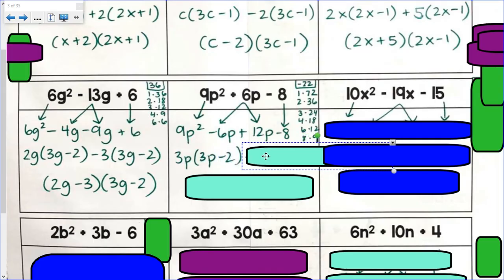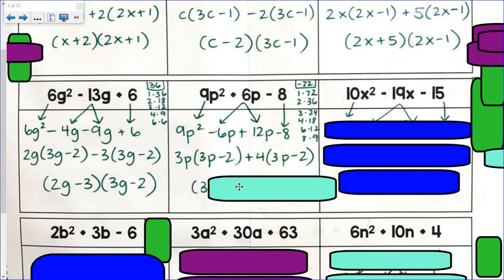2nd GCF is a positive 4. If I factor out a 4, I'm left with 3p minus 2. 3p plus 4, 3p minus 2.